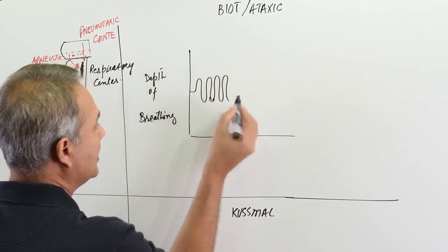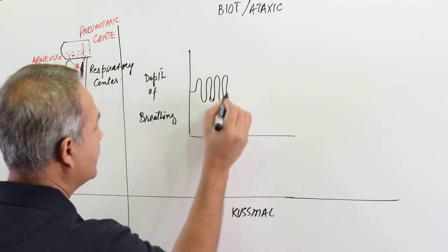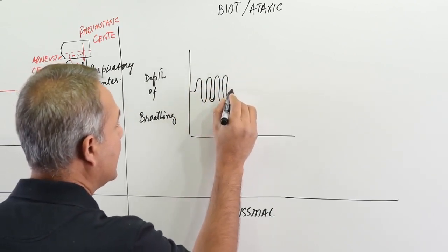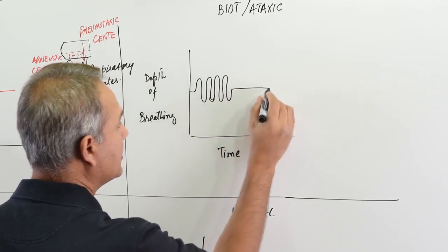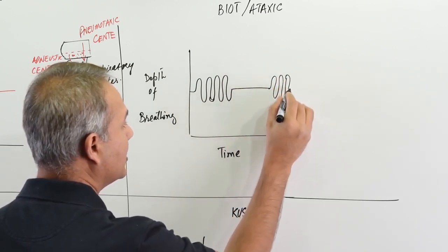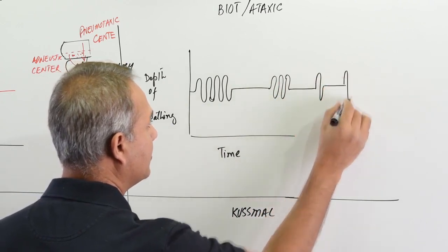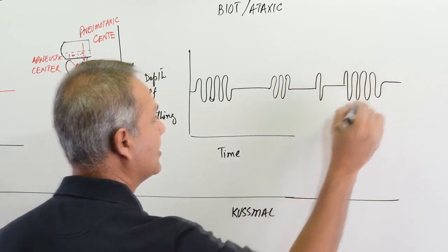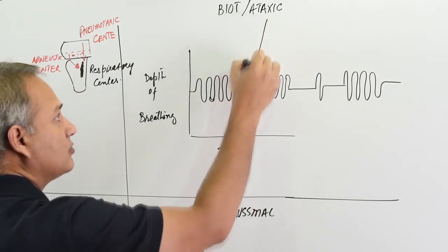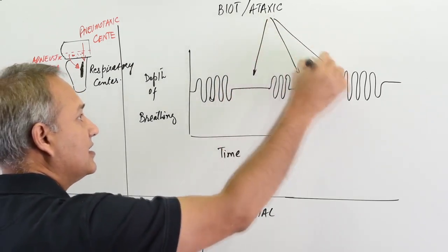But there are irregular patterns of apnea. Imagine they are all the same tidal volume, and then all of a sudden there is apnea. Then another few breaths, apnea again. Then maybe one breath, apnea again. Then many breaths again, and then apnea again - irregular. This is why it is called ataxia - the rhythm is irregular.